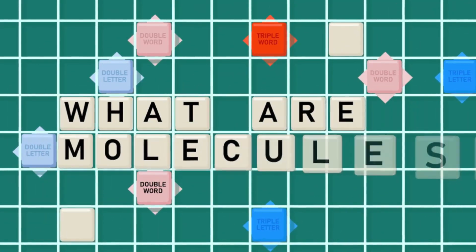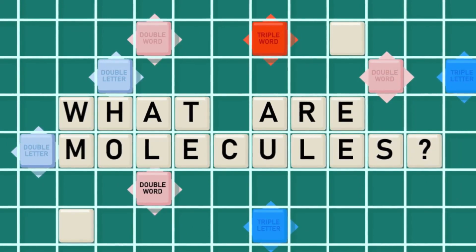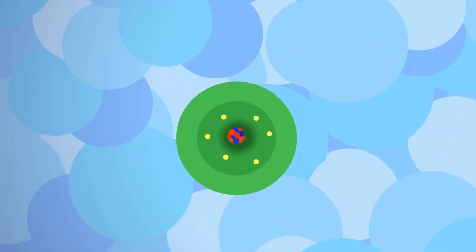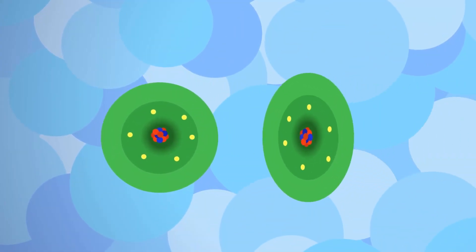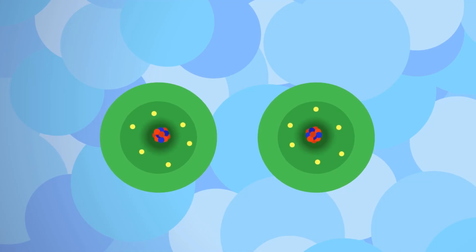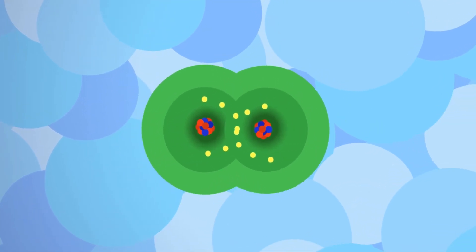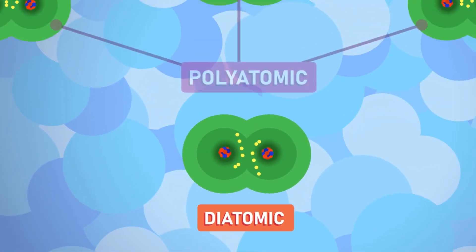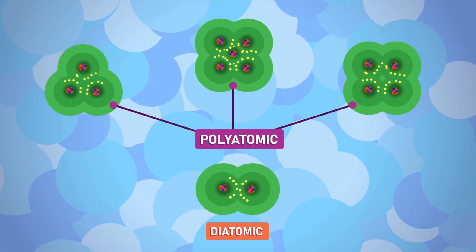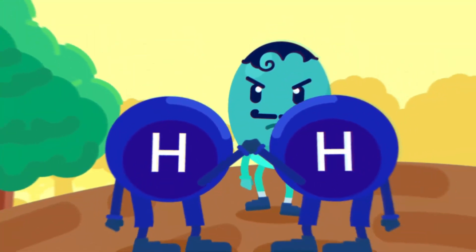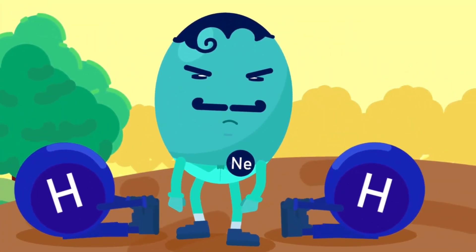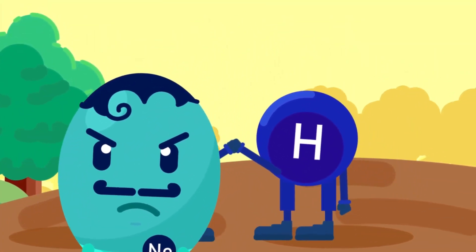What are molecules? Unlike the elements that have only one type of atom, molecules are formed by two or more atoms that are chemically combined. Molecules can be diatomic or polyatomic. Diatomic meaning that the molecules are formed by the combination of two atoms.